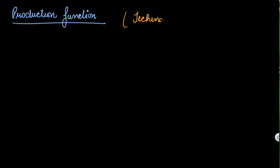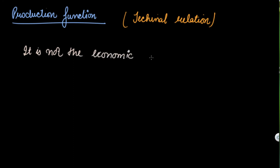Your production function only shows the technical relation between your inputs and outputs — it gives you the units of inputs and the units of output produced. It is not an economic relation. Production function just shows the number of units of inputs used to get the output; it does not give you the economic relationship.